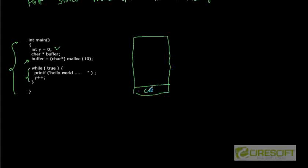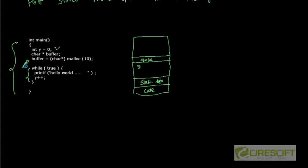We can visualize memory consumption like this: we have a 'code' section where tokens are stored, then a 'static data' section for any static variables. We also have a 'stack' area where variables like y are stored, and during runtime, any dynamically allocated memory comes from another section called the 'heap'. So this buffer is going to be allocated on the heap during runtime. This is how memory consumption is visualized for a simple C program.